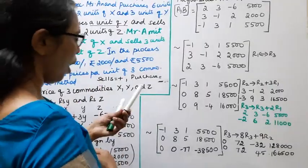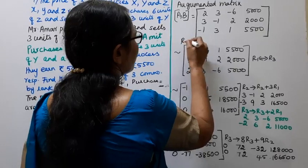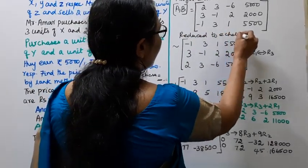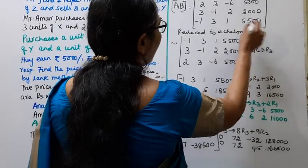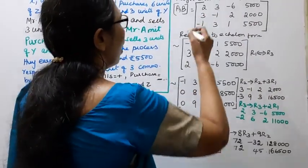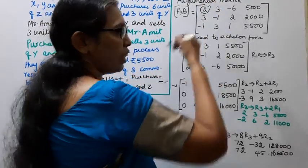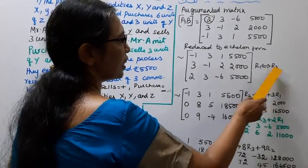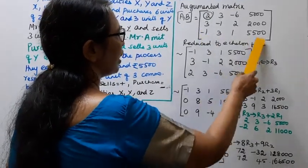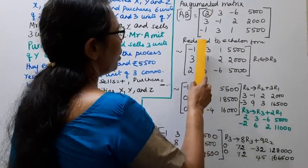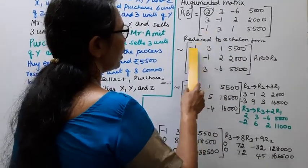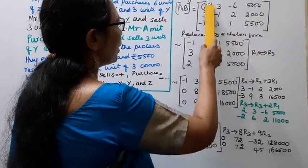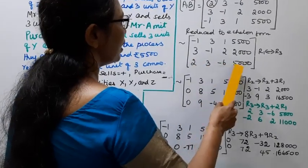To reduce to echelon form, since the first element of row 3 is minus 1, which makes it easy to get a leading 1, we interchange R1 and R3. After R1 ↔ R3: R1 becomes [-1, 3, 1 | 5500], R2 remains [3, -1, 2 | 2000], R3 becomes [2, 3, -6 | 5000].